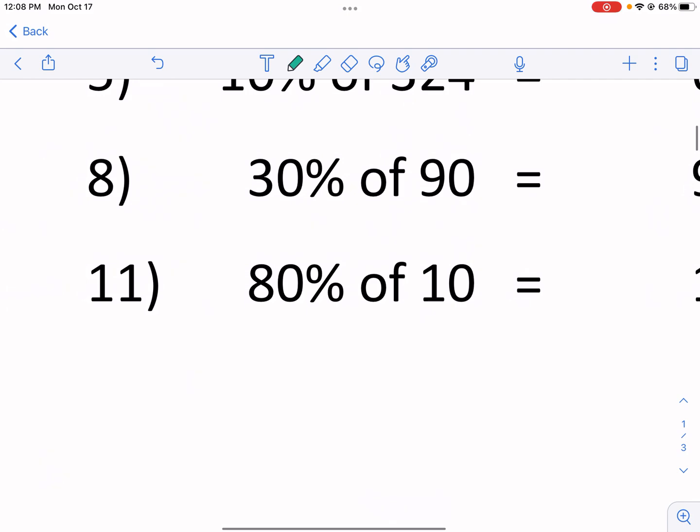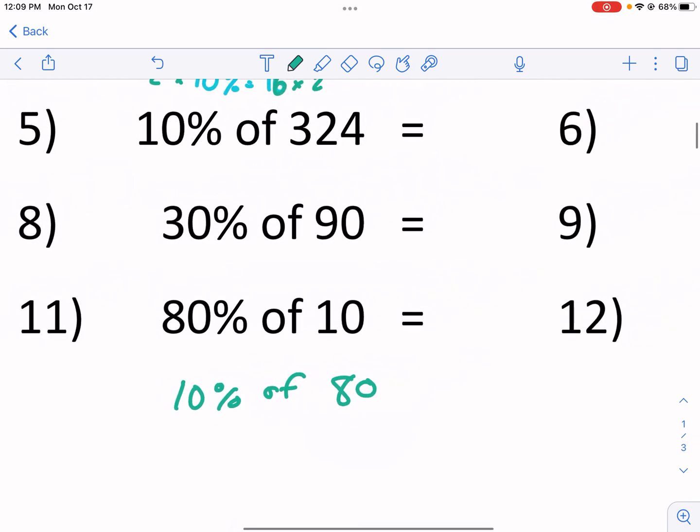So for example, if I didn't want to find 80% of 10, I'm like, I don't know how to do that. I could say, I want 10% of 80. I'm like, oh, 10%. I know that. That's pretty easy. I know that's just 8. Turns out it's the same thing.